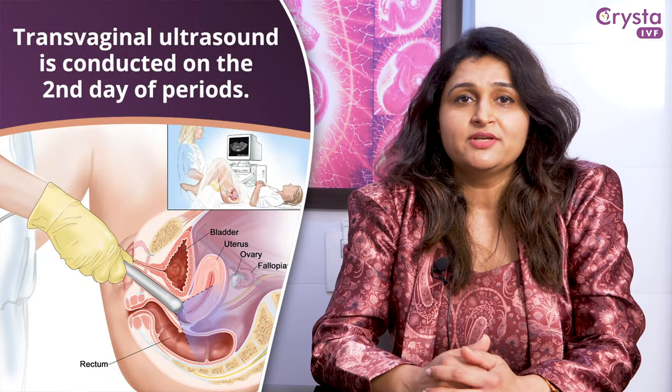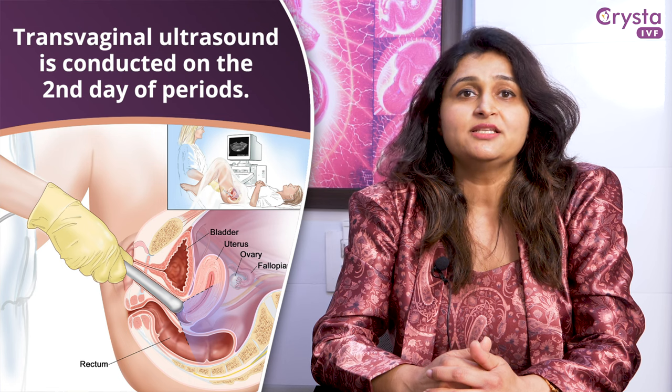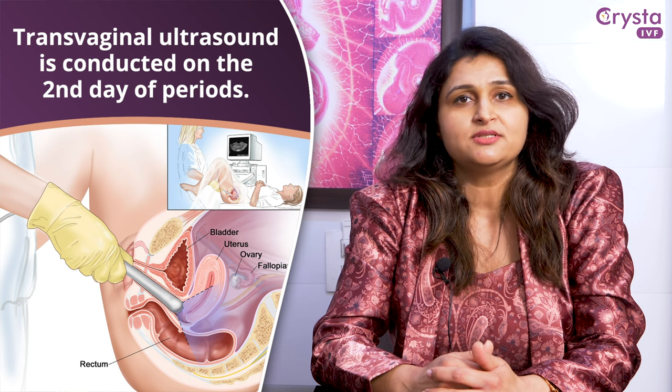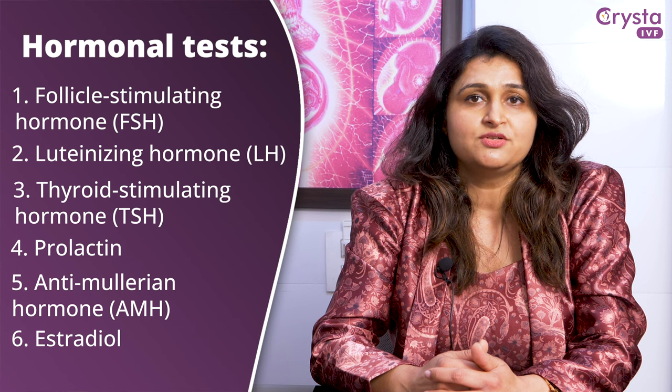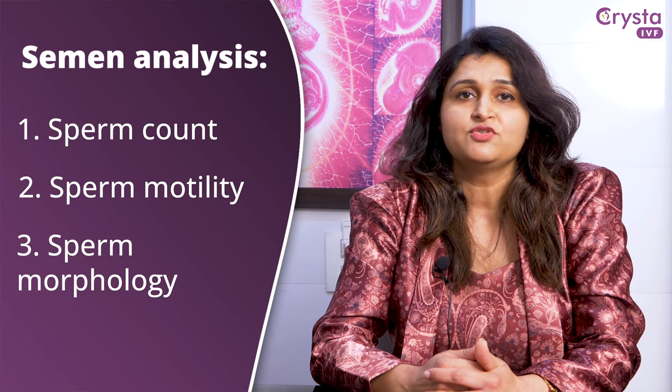To do IVF, we advise a basic transvaginal sonography on the second day of the period, in which we check the ovaries, the antral follicle count, the uterus, and any other issues. Along with that, we run a hormonal panel including FSH, LH, TSH, Prolactin, AMH, and Estradiol. We also need a semen analysis report covering sperm count, motility, and morphology.